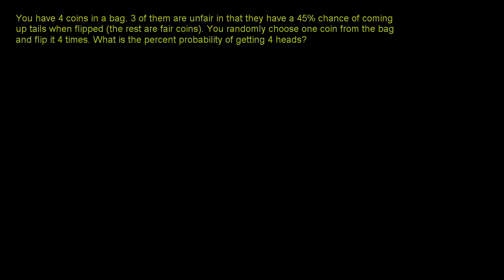Let's do another one of these dependent probability problems. You have four coins in a bag. Three of them are unfair in that they have a 45% chance of coming up tails when flipped. The rest are fair, so you have a 50% chance of tails or a 50% chance of heads. You randomly choose one coin from the bag and flip it four times. What is the percent probability of getting four heads?